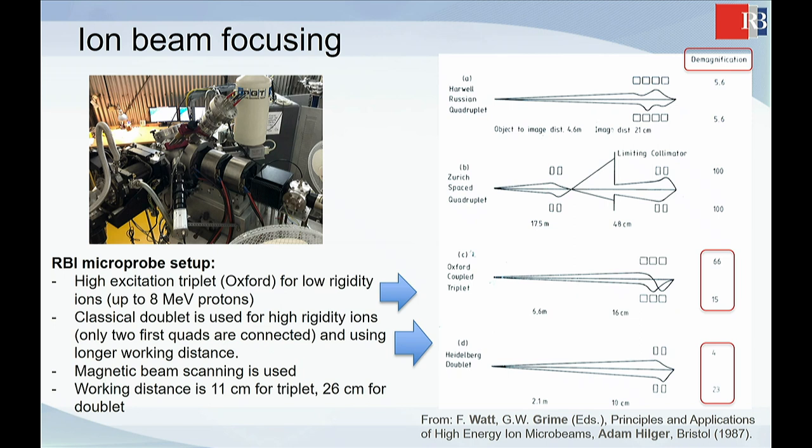And depending on the ratio between the working distances, you can calculate somehow the demagnification. In this particular example of very old picture from 30 years ago, this was in Heidelberg system, which was very short. But today, if you have doublet, maybe you can use six meters or so, and then you have the magnification of the order of 10 to maybe 50.